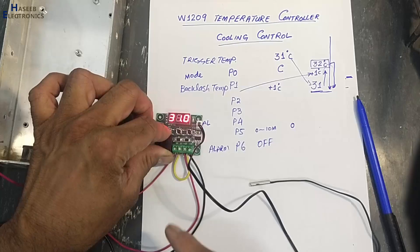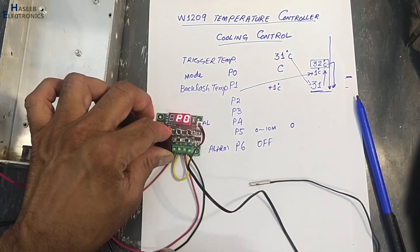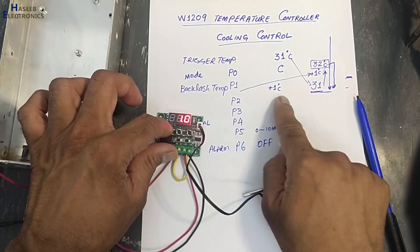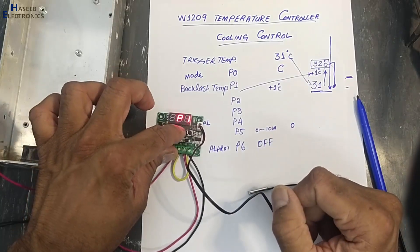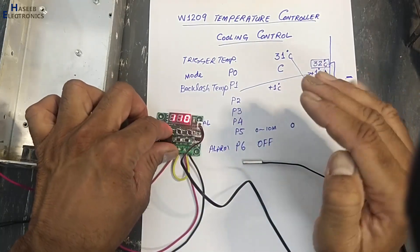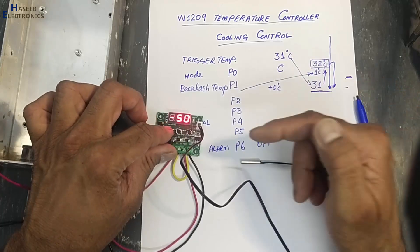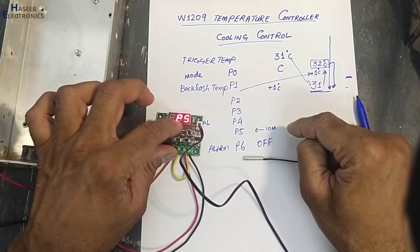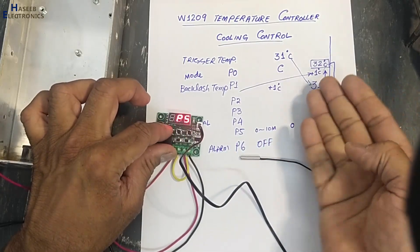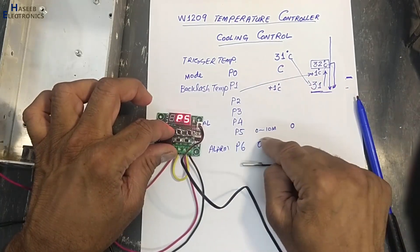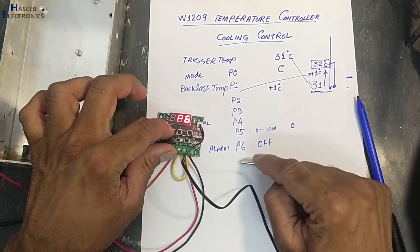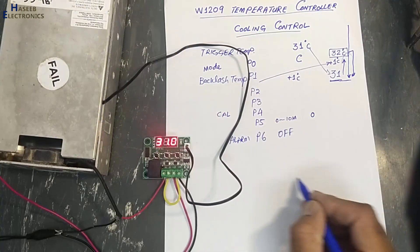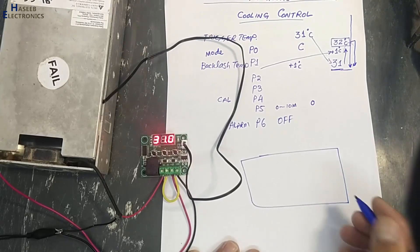Let's check all settings again. Trigger point temperature is 31°C — that's OK. P0 is in cooling mode. P1 backlash is 1°C — good. P2 maximum is 110°C — no need to change. P3 minimum is minus 50 — no need to change. P4 calibration is 0. P5 delay time is 0. P6 alarm is off.